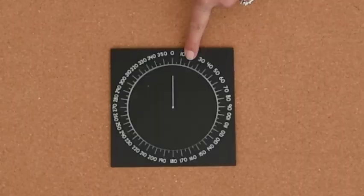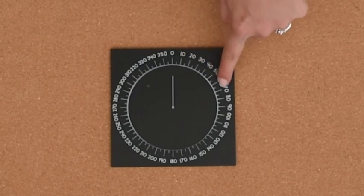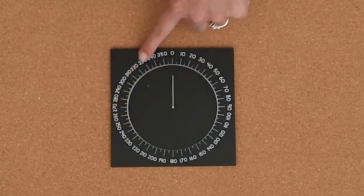Look here. If you look at this Montessori protractor, you can see that numbers go all the way around. Let's count them. We'll count in tens.